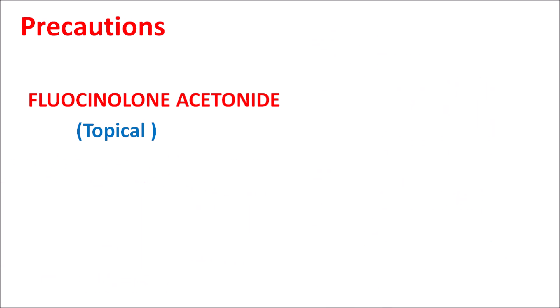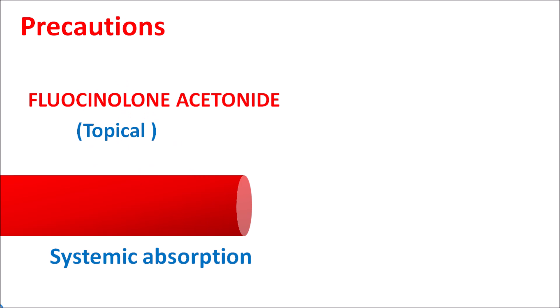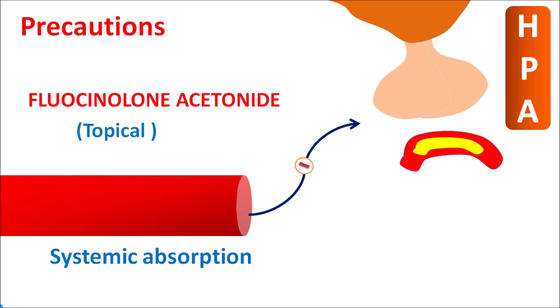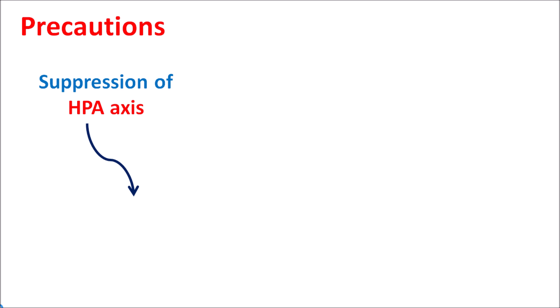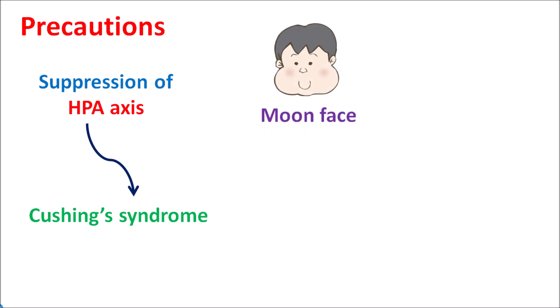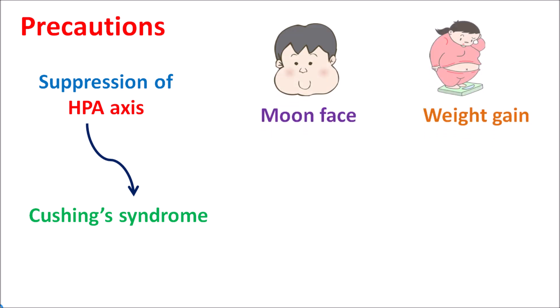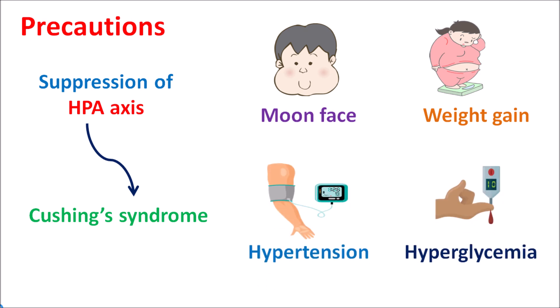Care should be taken to reduce the systemic absorption. When this drug is absorbed into the systemic circulation, it can suppress the HPA axis — hypothalamus, pituitary, adrenal axis — so that the release of cortisol is somewhat reduced, resulting in various systemic side effects. By suppression of HPA axis, fluocinolone acetonide can produce a variety of conditions commonly known as Cushing syndrome. This drug can develop symptoms just like Cushing syndrome, resulting in development of moon face, weight gain, increased blood pressure resulting in hypertension, and increased glucose levels resulting in hyperglycemia. In children, it can also produce mental retardation and retardation of growth — all these due to enhanced systemic exposure of this drug.